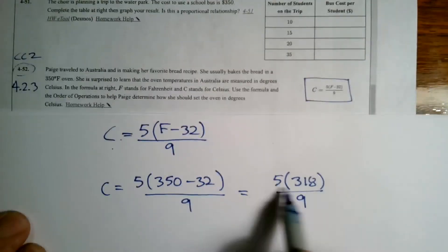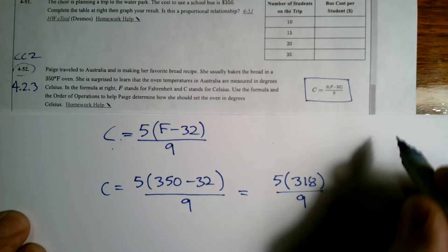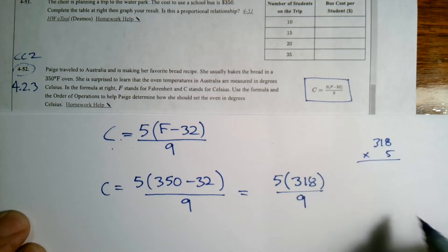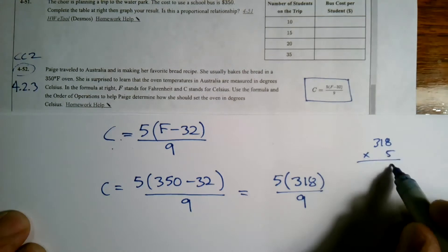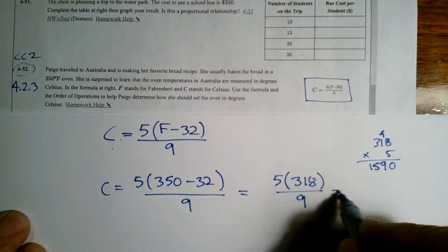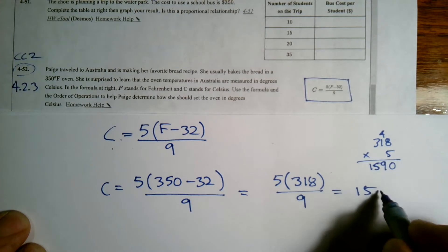So now we've got multiplication up top. So 5 times 318. I'll do that on the side here using the standard algorithm for multiplication. 40, here's the 4, 5, 9, and 15. Right? So I have, this is equal to 1590.